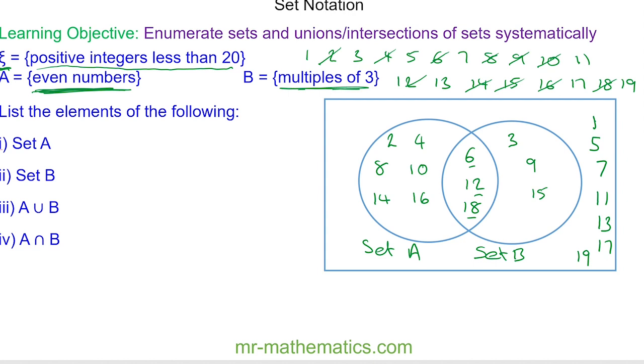So list the elements of set A, well these are the even numbers. List the elements of set B, these are the multiples of 3.